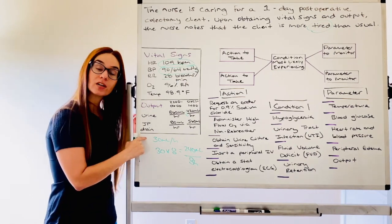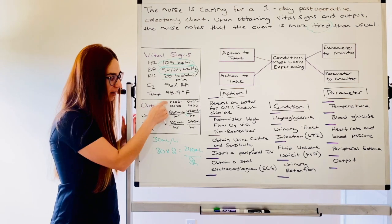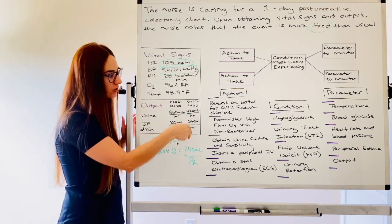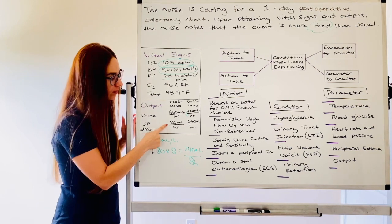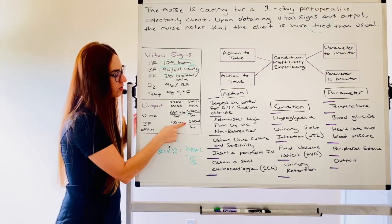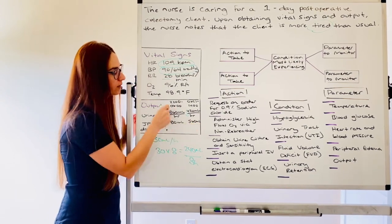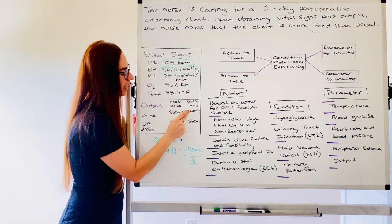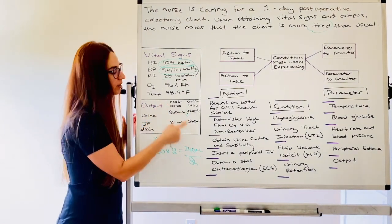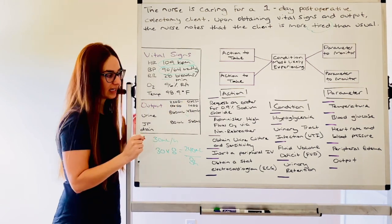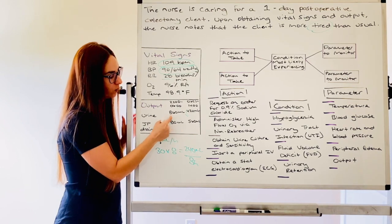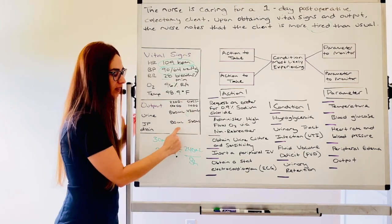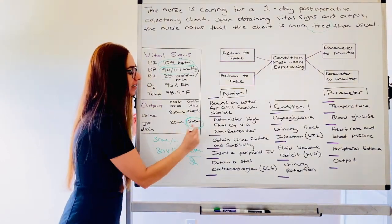Now look at the JP drain. A JP drain, of course, can be placed after surgery. The initial eight-hour prior to right now, they had 80 mLs of output. I want you to think 80 mLs over the course of eight hours. They had 860 mLs of urine out over this eight-hour period. Then they had 420 mLs of urine out over this eight-hour period. Now, that initial eight-hour period, when they had higher urine output, they only had 80 out from their JP drain.